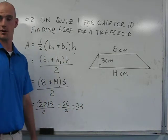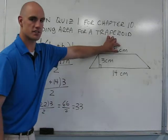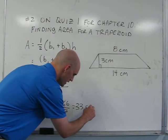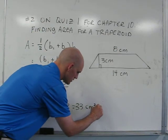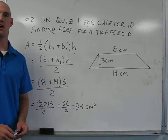Area is always represented in units squared, and since our units are centimeters, we end up with thirty-three centimeters squared as the area of our trapezoid.